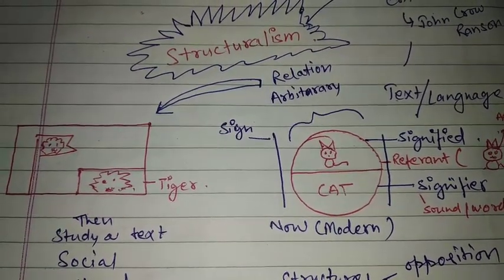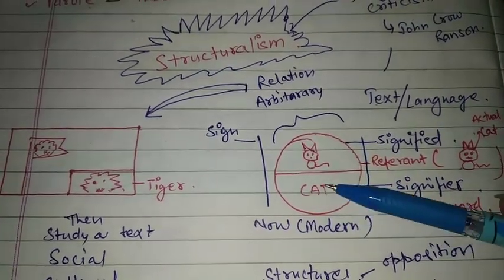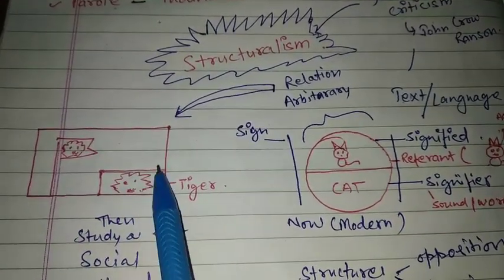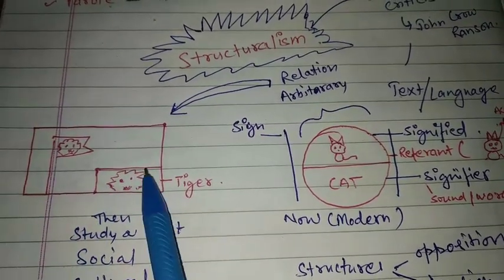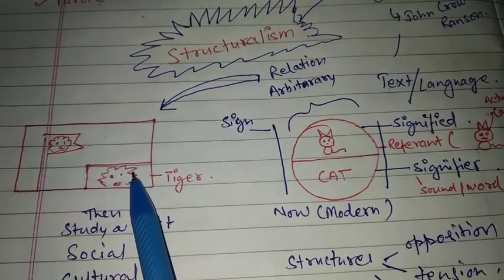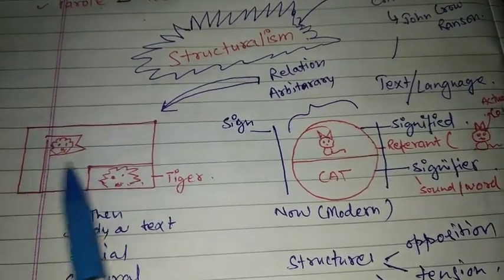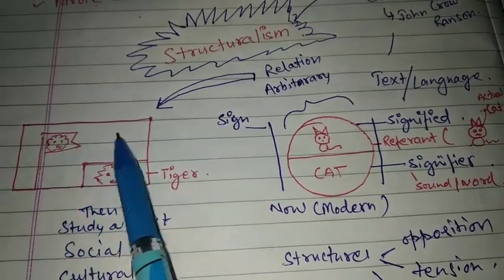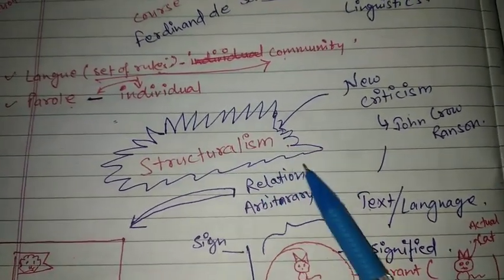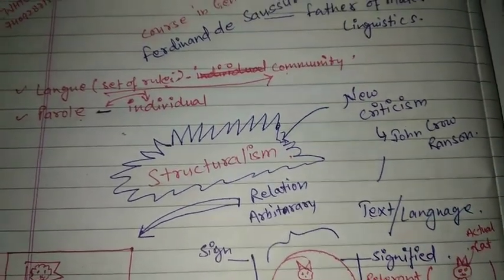Saussure talks about the arbitrary relationship between the signifier and signified. Whatever we write can represent something else. For example, we have the actual tiger — if I write 'tiger' it means the actual tiger. But if I put this tiger in a flag, it can represent a nation. That's why he talks about arbitrary relationship, meaning a changing relationship — it is not fixed.